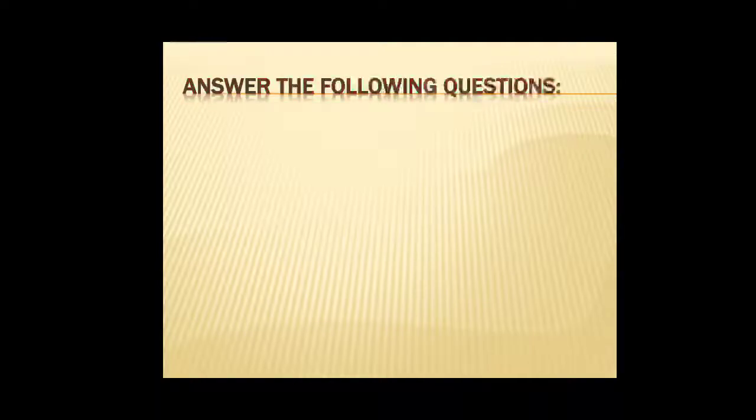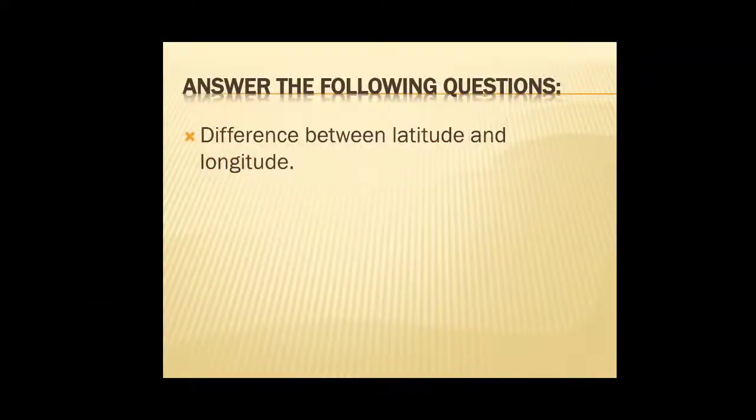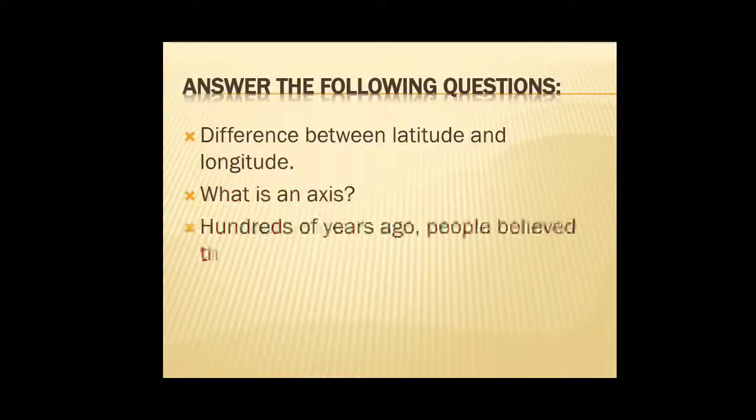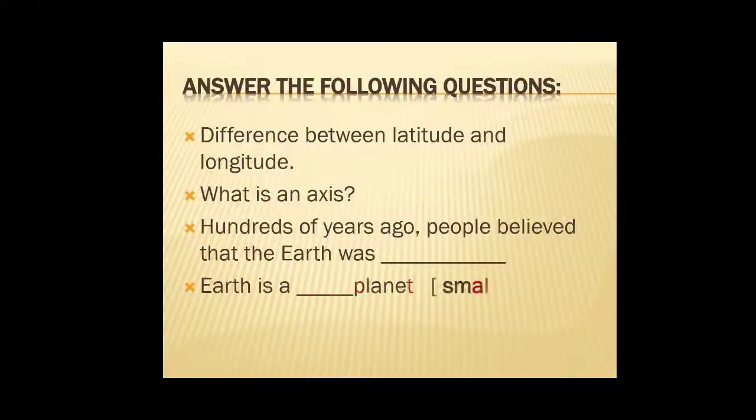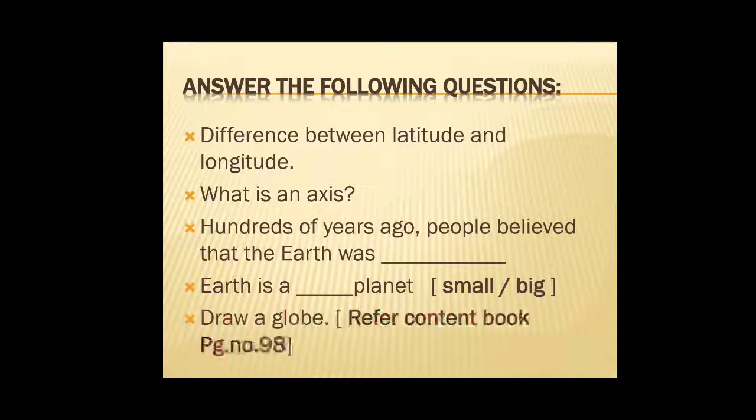So children, based on this video there are few questions. Answer the following questions. First question, difference between latitude and longitude. Second one, what is an axis? Third one, hundreds of years ago people believed that the earth was dash. Fourth one, earth is a dash planet, small or big. The next one is draw a globe. For this you can refer your content book page number 98.